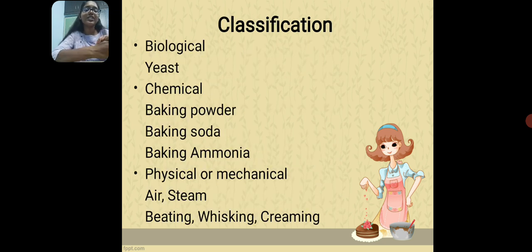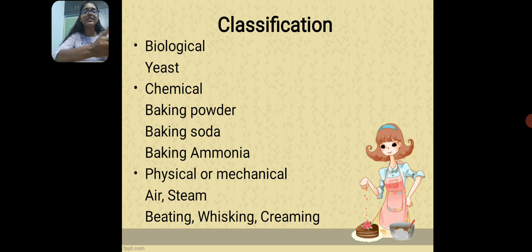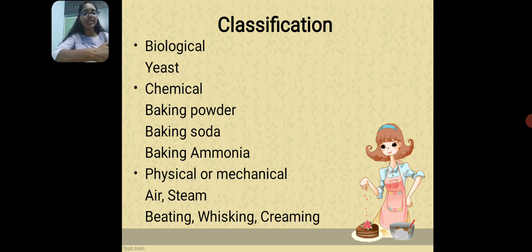Classification: Leavening agents can be categorized into three types — biological, chemical, and physical or mechanical. Under biological is yeast; under chemical are baking powder, baking soda, and ammonia; and under physical or mechanical are steam, beating, whisking, and foaming.